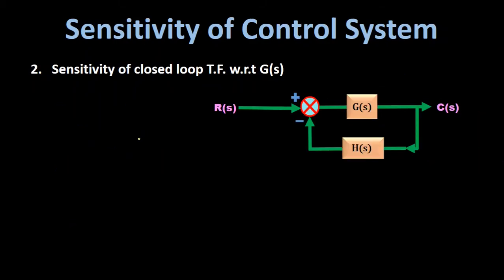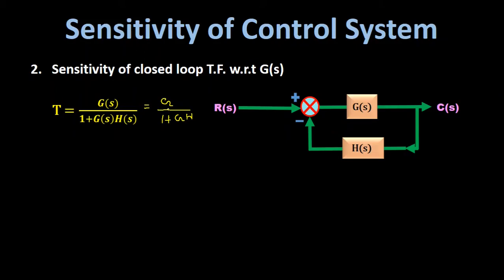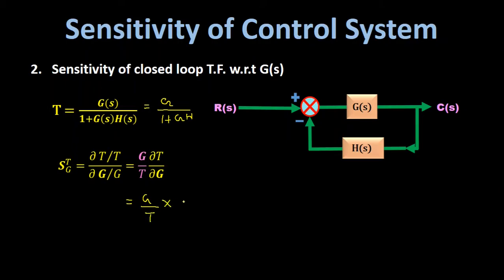Next we find the sensitivity of the closed loop transfer function with respect to G(s). For a closed loop system with negative feedback, T = G(s) / (1 + G(s)·H(s)). Omitting s for the derivation, T = G / (1 + GH). According to the definition, S_TG equals (G/T)·(∂T/∂G).